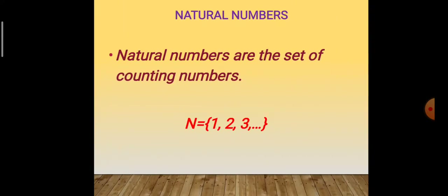Let us look at a few examples. Natural numbers are the set of counting numbers, and these are all real numbers. All natural numbers are real numbers. N = {1, 2, 3, ...}.